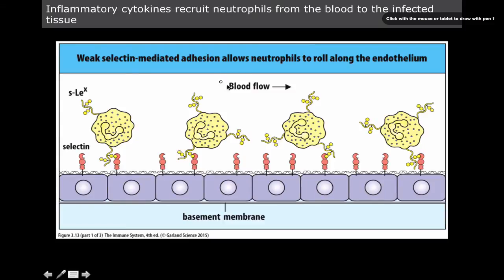The first step we have here is a diagram that talks about all the cell adhesion molecules that we previously covered in the last video. We have weak selectin-mediated adhesion. Notice that it's weak. Selectin-mediated adhesion allows neutrophils to roll along the endothelium.